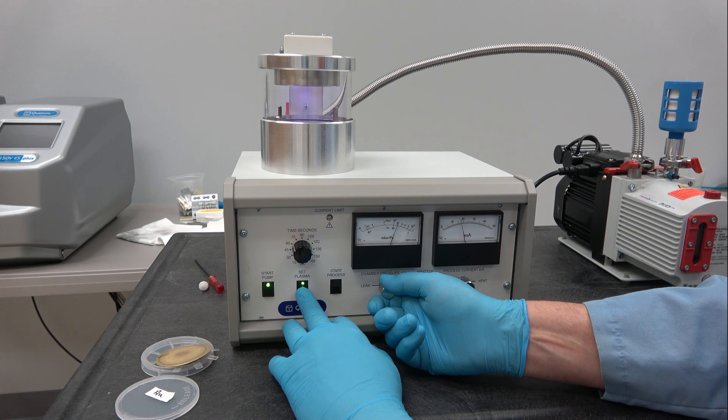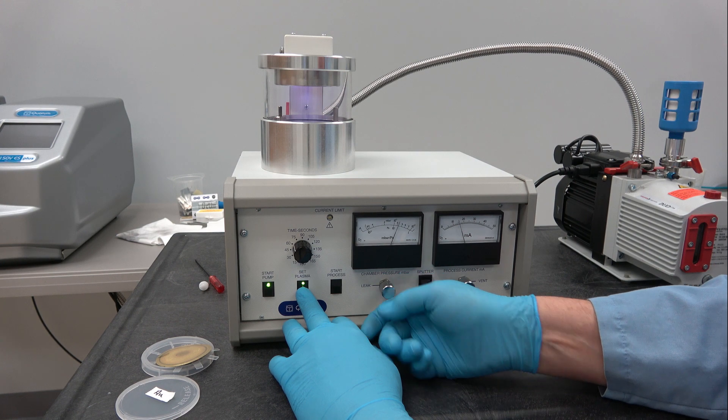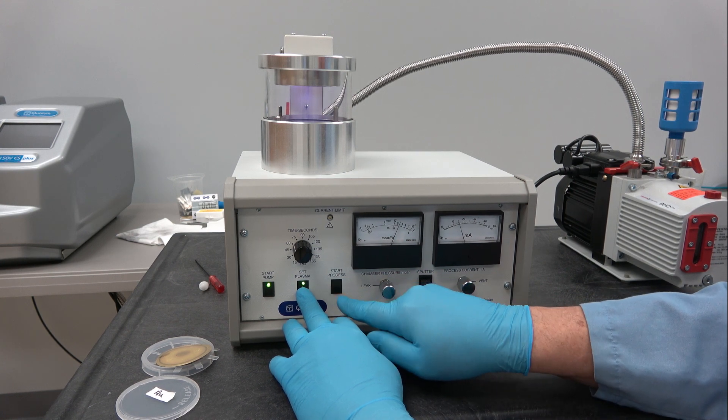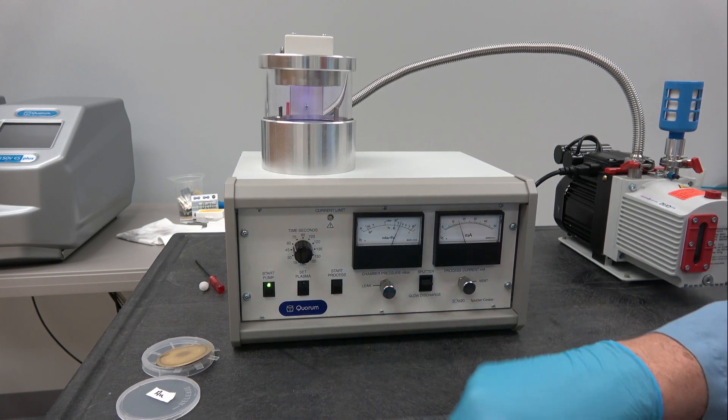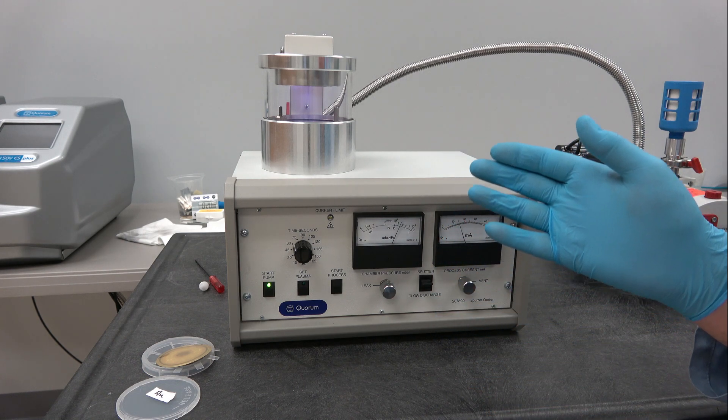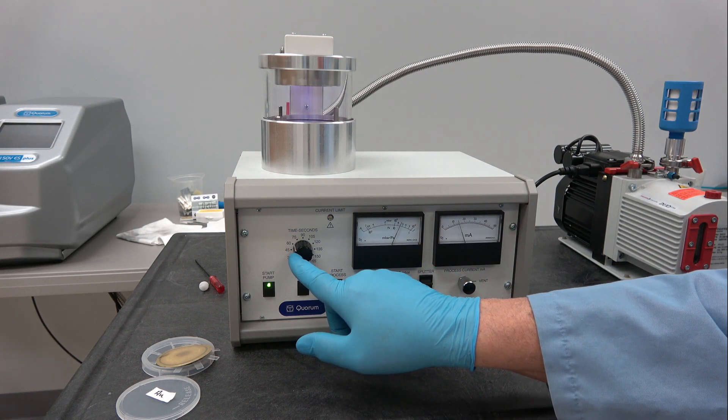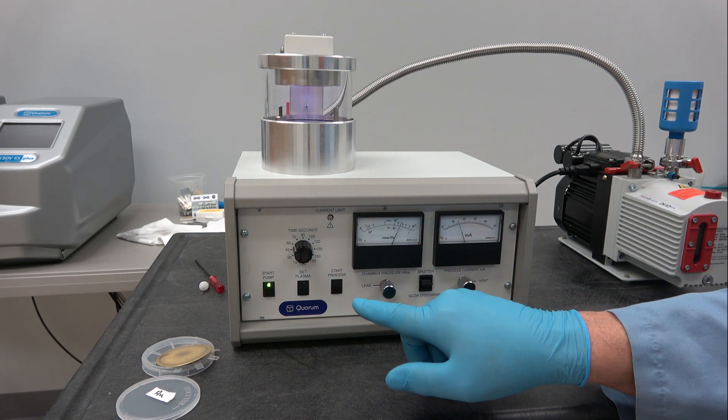So we'll just set it to 15. And once it's at 15, we can hit start process. And it will maintain the sputtering for whatever value you have set on the timer. In this case, I think 60 seconds.